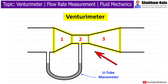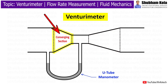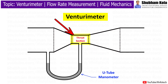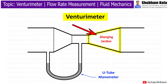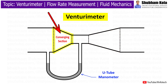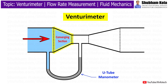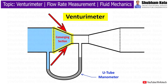The Venturimeter consists of three main parts – the converging section, throat section, and diverging section. The converging section is the inlet section of Venturimeter where the fluid enters the device. It has gradually decreasing diameter.